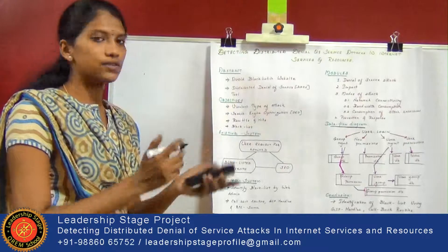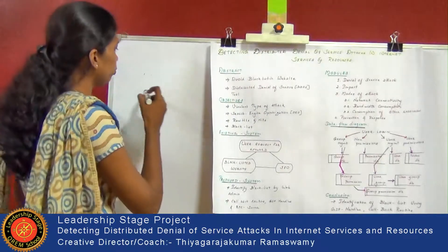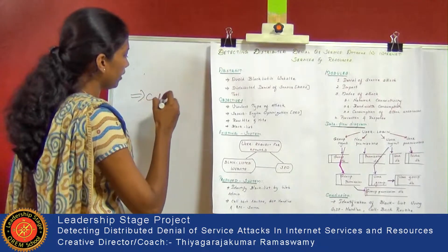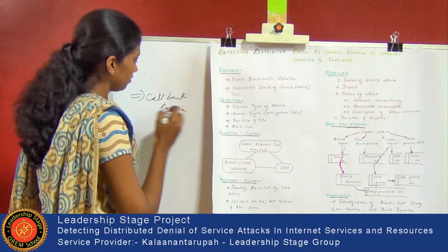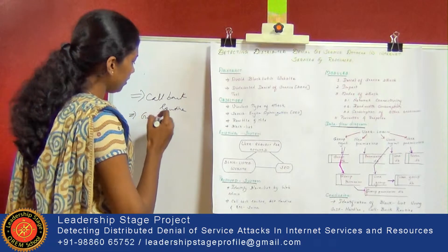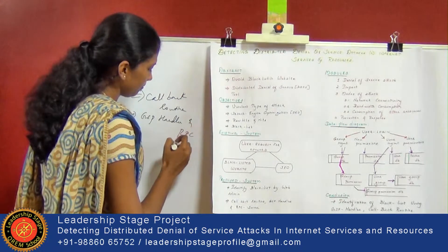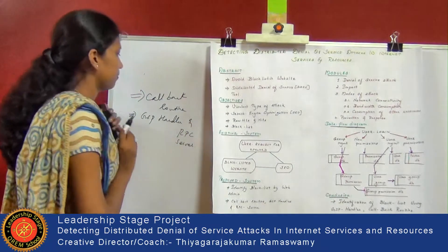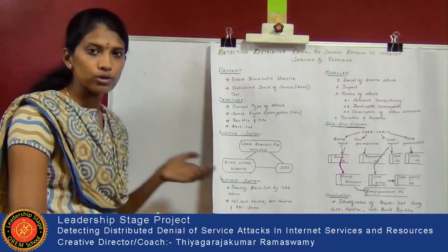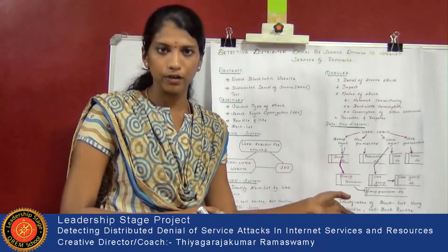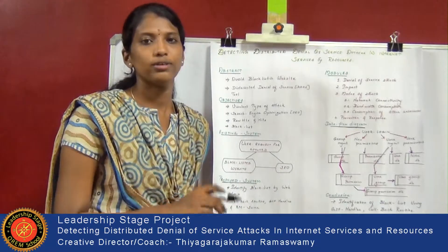Through this denial of service attack detection, we have banned the blacklisted content of the website using two tools: callback routing and GSP handler, and RPC server. From these tools we can avoid the blacklisted content of the website, and the web admin can use it easily, which makes it a fast process too. Thank you.